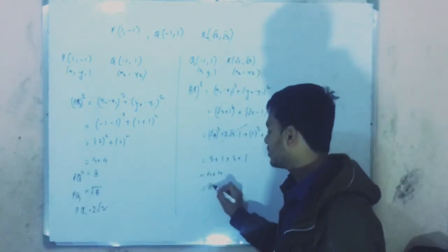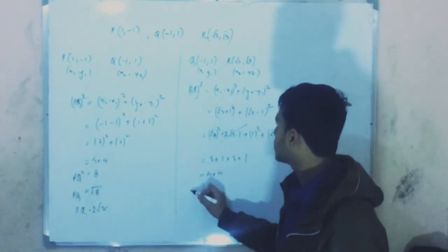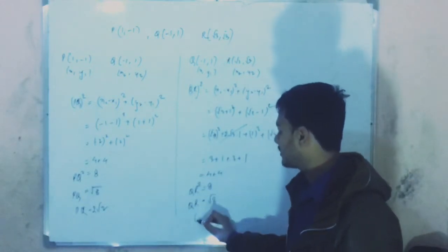Again, you have QR squared equals 8, so QR equals 2 root 2. And finally, we need to calculate RP.